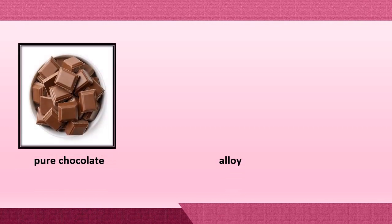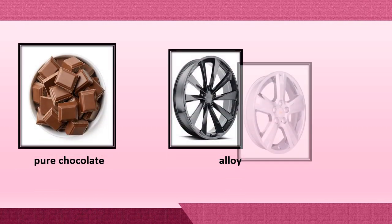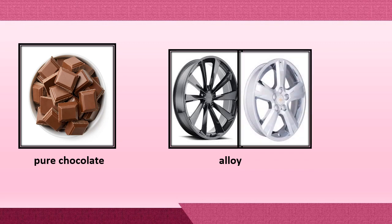Here are other examples of homogeneous mixture: pure chocolate and alloy. They are all in a solid form. A pure chocolate is made up of milk, sugar, and cocoa, but you cannot recognize the cocoa, the milk, and the sugar anymore because they are uniformly distributed. Also, alloy is made up of different kinds of metals, but you cannot recognize them anymore.